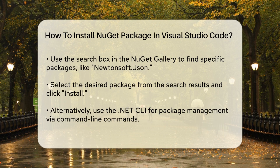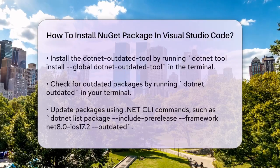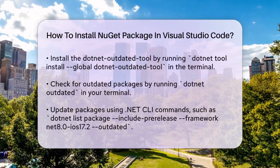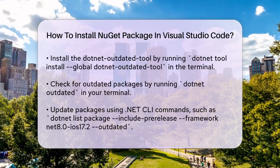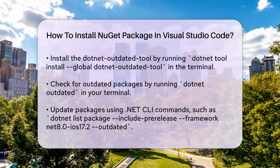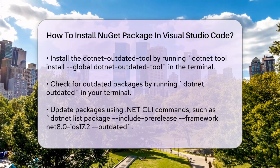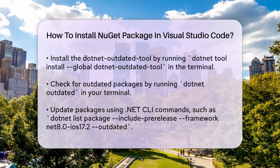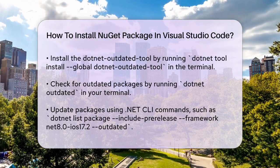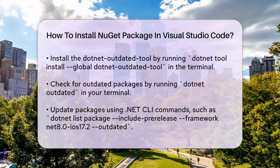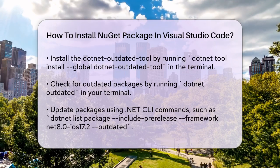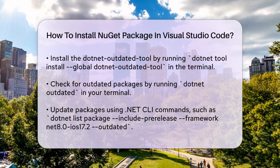Another method is to use the .NET CLI if you prefer working with commands. You can install the .NET outdated tool to help manage your packages. To install this tool, open your terminal in VS Code and run the command: dotnet tool install --global dotnet-outdated-tool. This tool helps you see which package versions are available and allows you to update them easily.